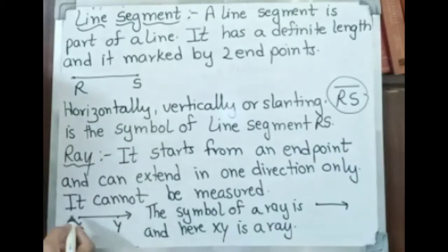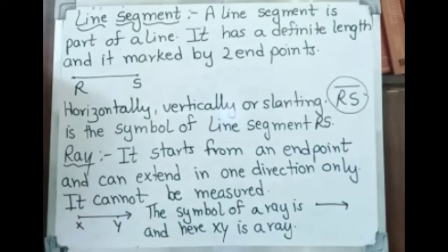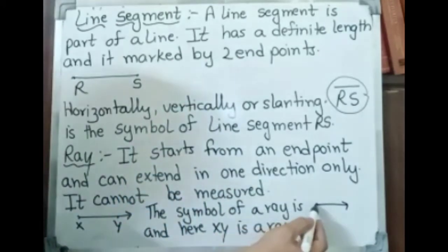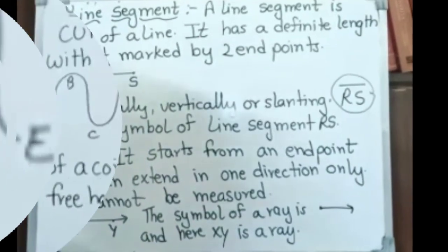Ray: it starts from one end point and can extend in one direction only. It cannot be measured. One side we have an arrowhead, meaning it extends endlessly in that direction. The symbol of a ray has one endpoint and one arrow. XY is a ray.